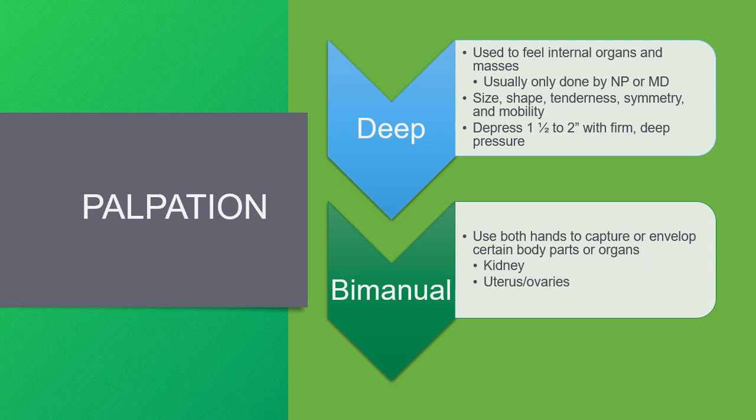Bimanual palpation is used when you're cupping your hands or using both hands around body parts to capture or envelop those body parts or organs. A good example is the kidney. Also, for women, a bimanual pelvic exam involves one hand in the vagina and the other hand on the abdomen pushing down, to determine the size and location of the ovaries and uterus. This is not within our scope of practice and certainly not something expected in clinical.